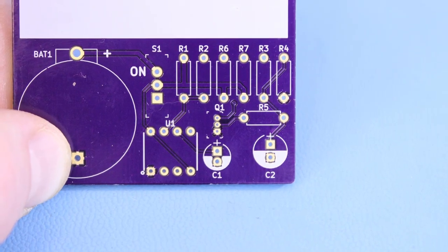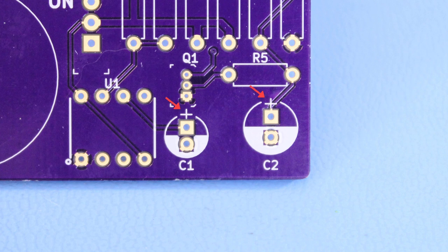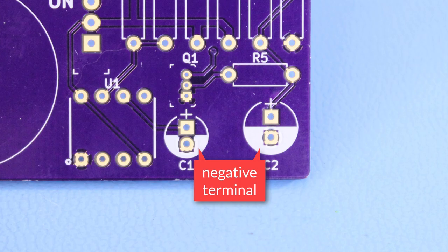Take a look at the footprints for the two capacitors, C1 and C2. You should see a little plus symbol in silkscreen showing the positive terminal. The filled-in semicircle is the negative terminal.